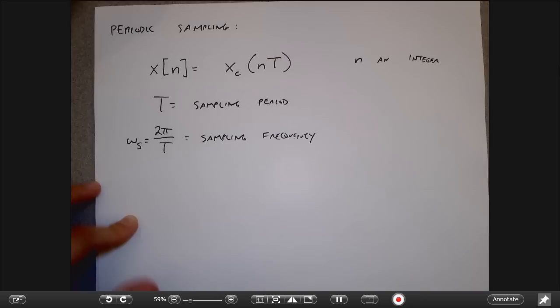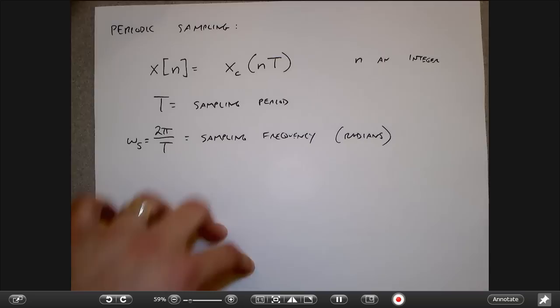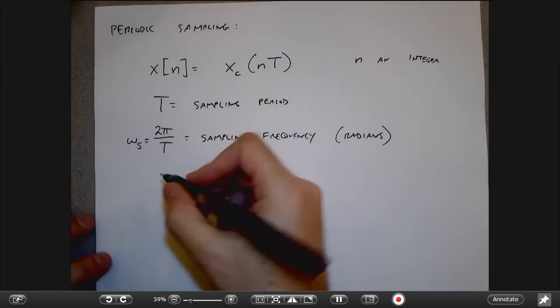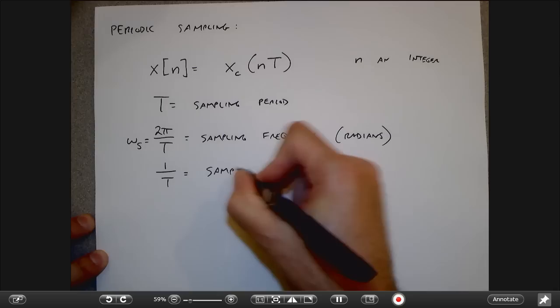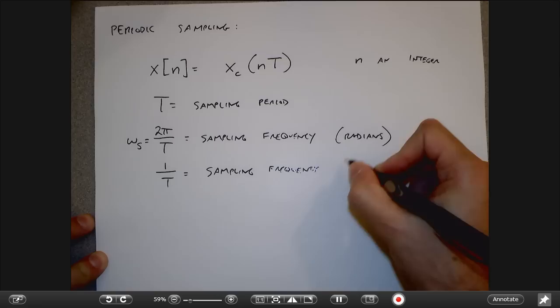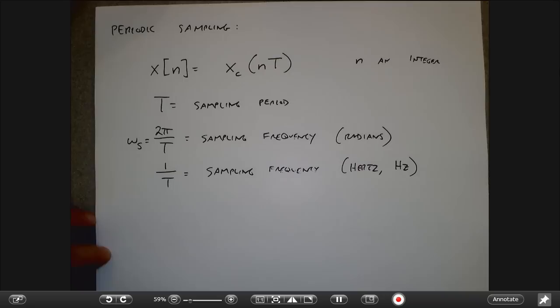The sampling frequency is measured in radians — that's where the π's are involved. If you wanted to talk about hertz, you could just look at 1/T, so the sampling frequency in hertz is just the reciprocal. In this class we're going to talk about radians, because that's where the mathematics is more natural.